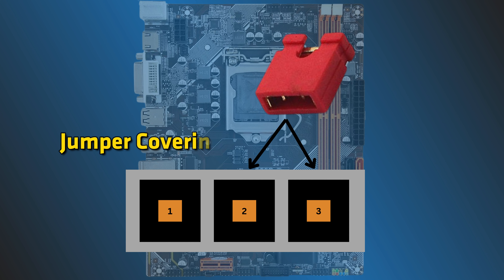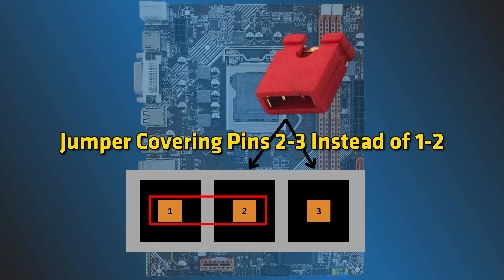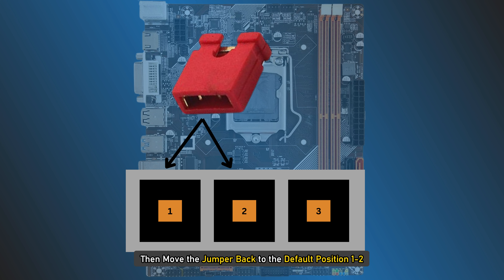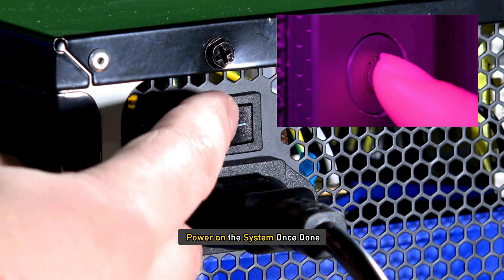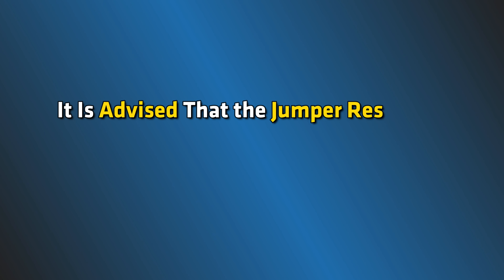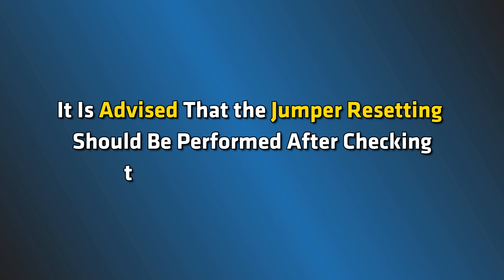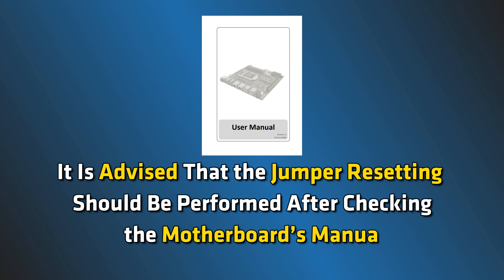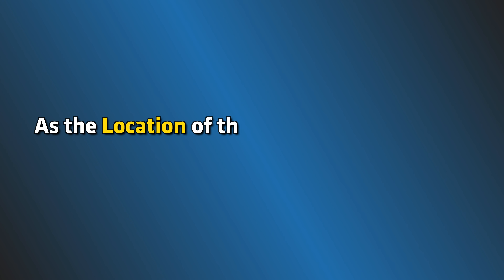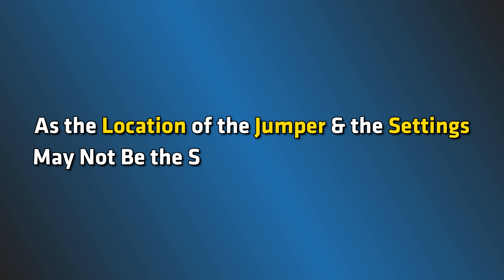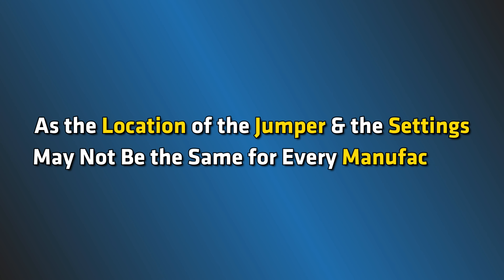Wait for a few minutes with the jumper covering pins 2nd to 3rd instead of 1st to 2nd. Then move the jumper back to the default position, 1st to 2nd, and power on the system. It is advised that jumper resetting should be performed after checking the motherboard's manual, as the location of the jumper and the settings may not be the same for every manufacturer.